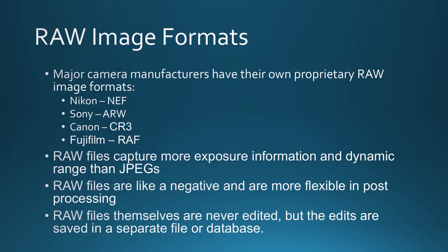Next are RAW image formats. Major manufacturers have their own proprietary RAW image formats: Nikon has NEF, Sony has ARW, Canon has CR3, and Fujifilm has RAF. Those are the extensions you'll see on those files. Most third-party editors will recognize the major brands of RAW image formats as well. The major manufacturers usually have a free program to edit those RAW images, so you can use a camera manufacturer's editor to bring a RAW image into a format usable in a third-party editor.